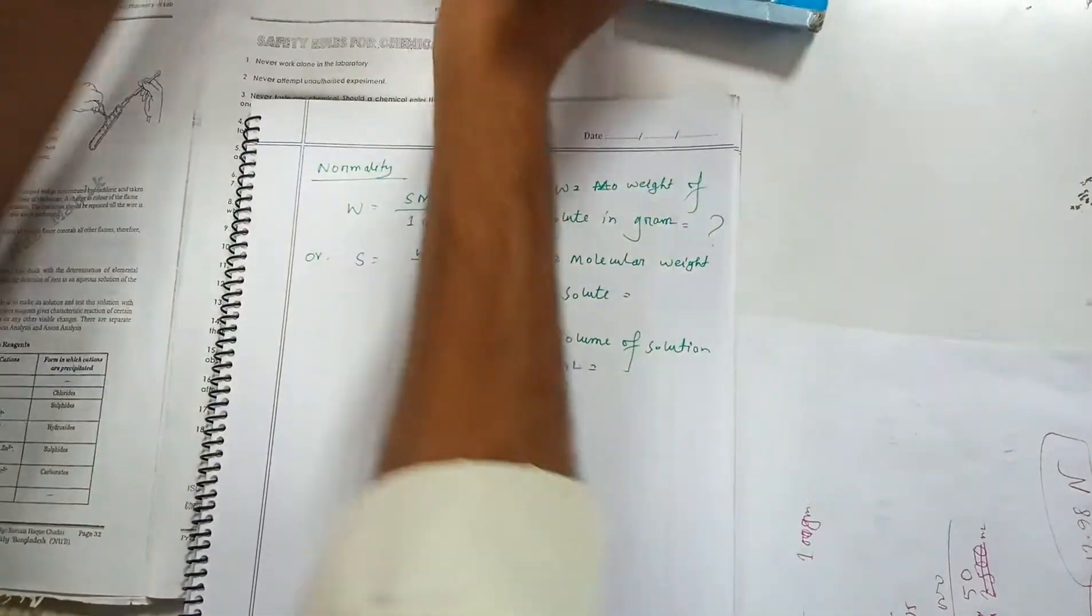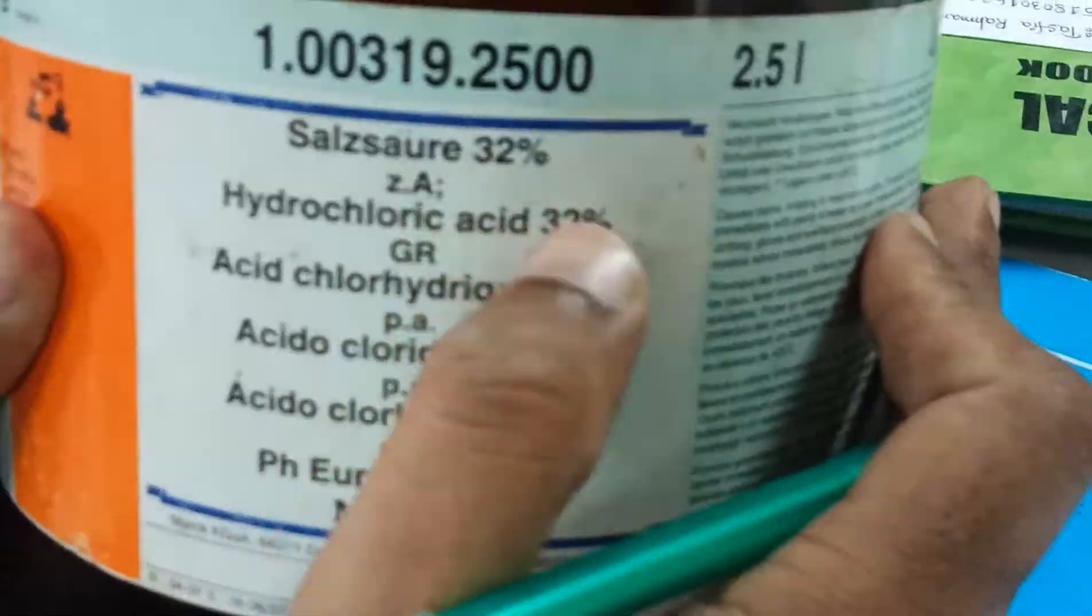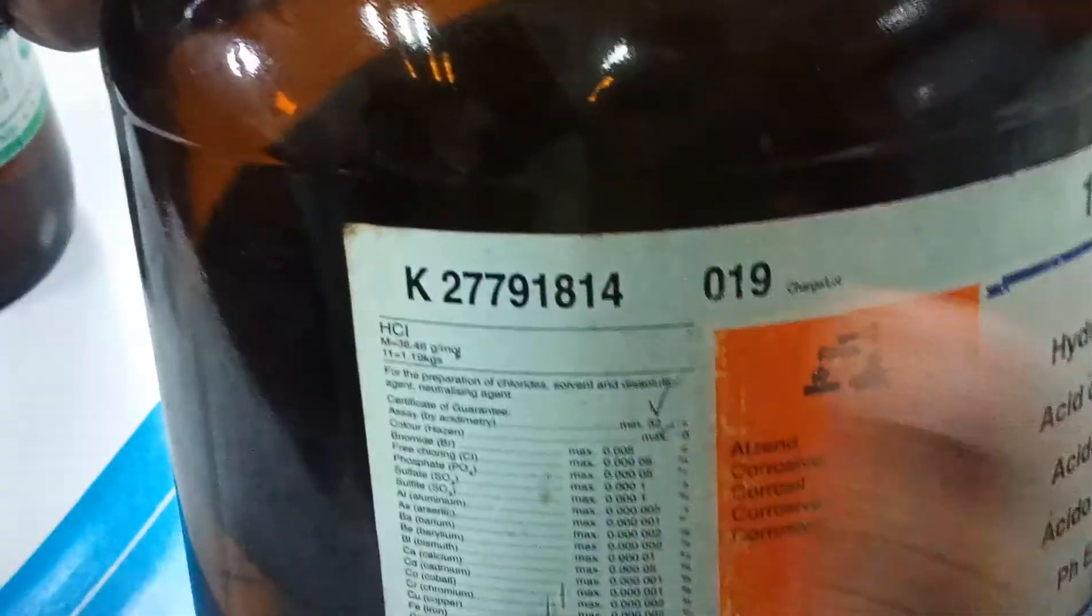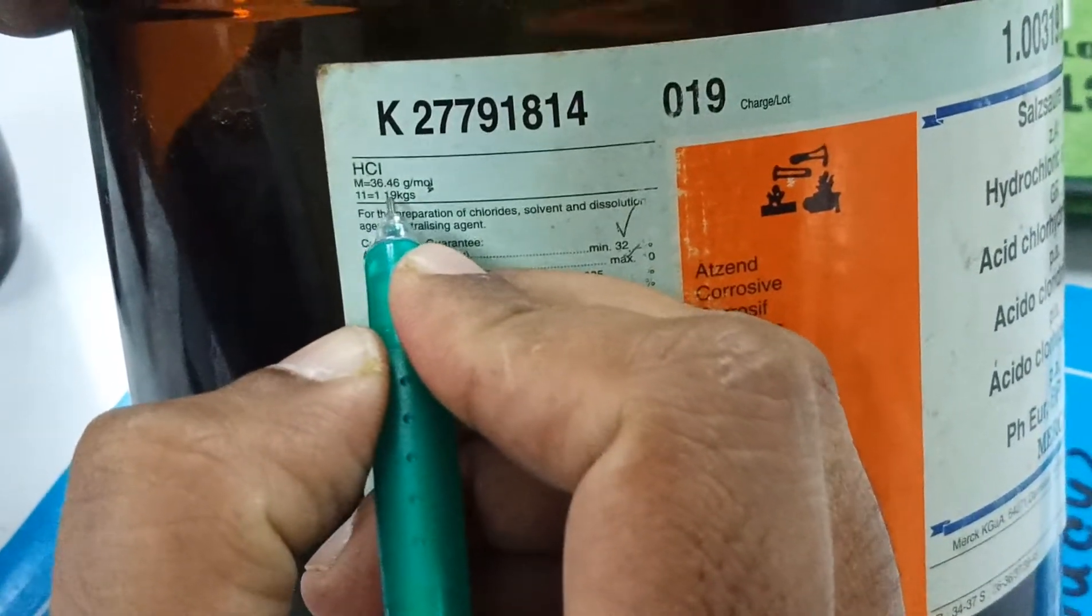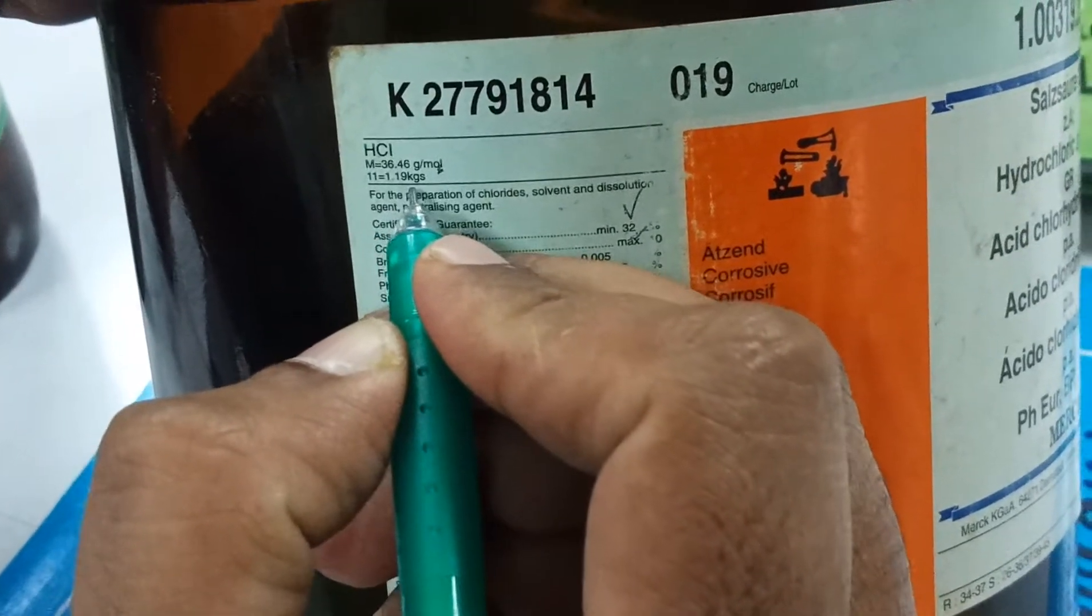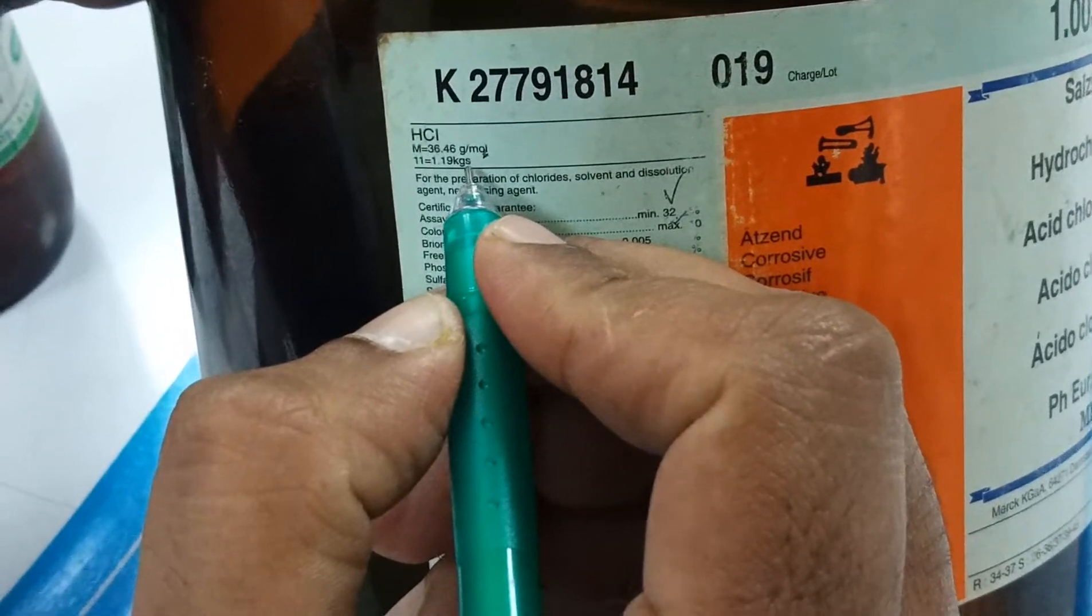What will be the normality for this hydrochloric acid solution whose purity is 32%, the molecular mass is 36.46 grams per mole, and whose 1 liter equals 1.19 kg? This is its specific gravity.